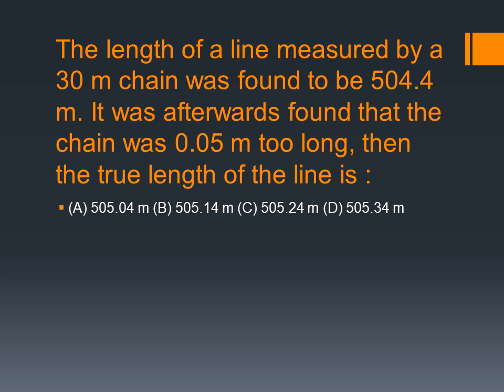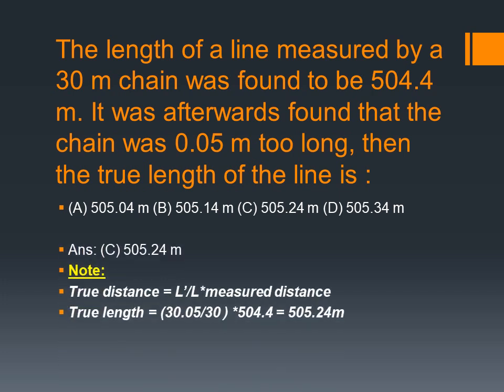We can find the true length. True length is equal to L' divided by L, multiplied by the measured distance. L' is given by L plus the error: L is 30m, the chain is 0.05m too long, so L' equals 30.05.